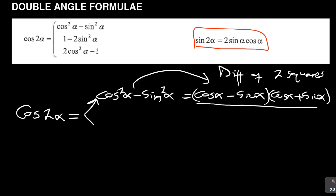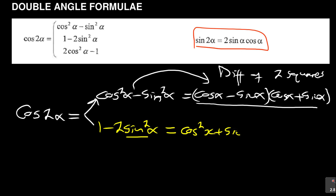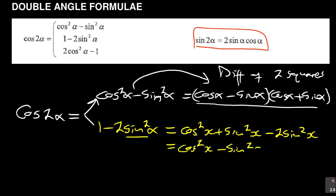The next form is 1 minus 2 sin²α. On this one, ensure that you are dealing with sine. The 2 is the one that affects it — it doesn't make it a difference of two squares. But remember, 1 can be written as cos²x + sin²x. Then minus 2 sin²x becomes cos²x minus sin²x, which takes you back to the first form.